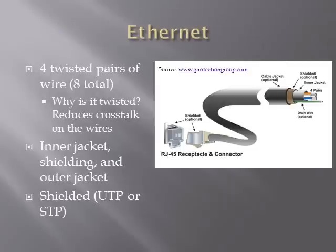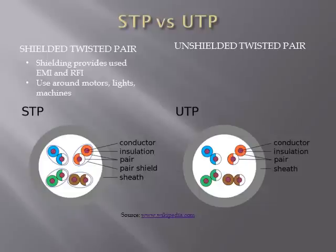Ethernet consists of four pairs of wires wrapped to reduce cross-talk, with an inner jacket housing the eight wires. It can be shielded or unshielded. Shielded twisted pair uses a special insulation wrapped around the wires, providing some EMI and RFI protection.